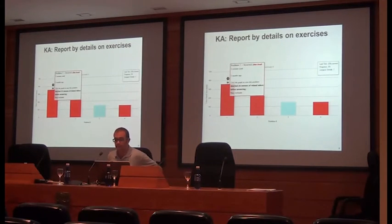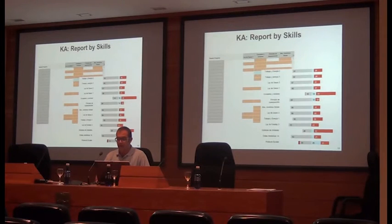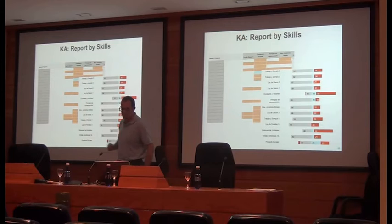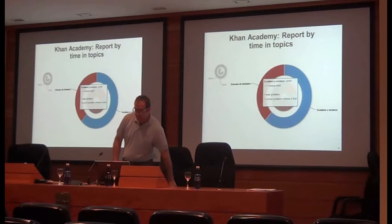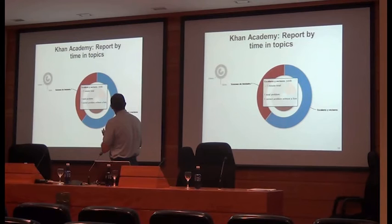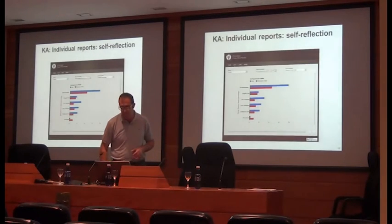Khan Academy presents by default a set of learning analytics features. For example, you can see details about the hints used or the number of problems attempted. You can see here for each topic, in different colors, whether the student didn't interact with the platform, whether the student struggled with the problem, or the number of students that solved them correctly. There are also pie charts in which you can visualize the proportion of different topics and the time spent on each topic for videos and exercises.